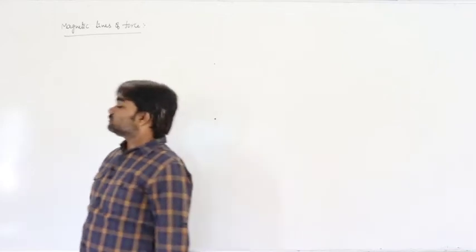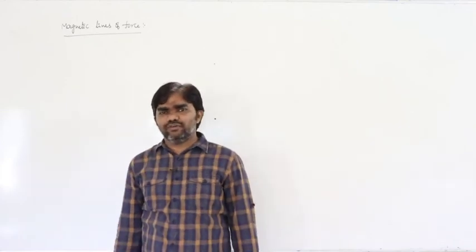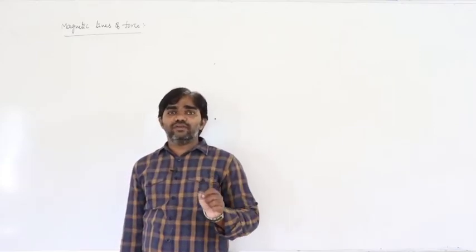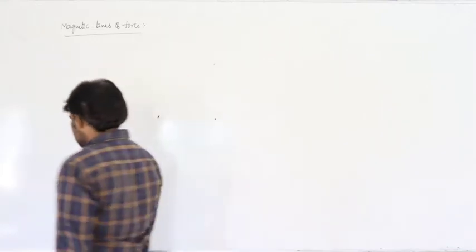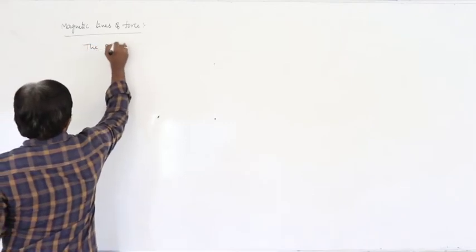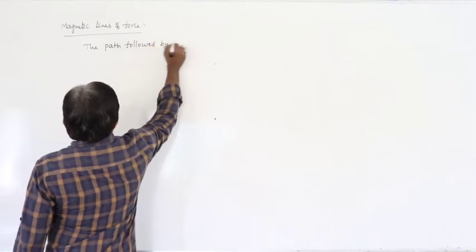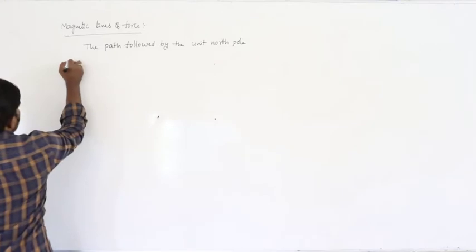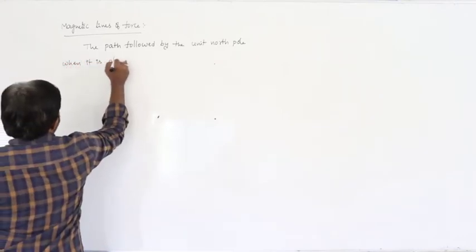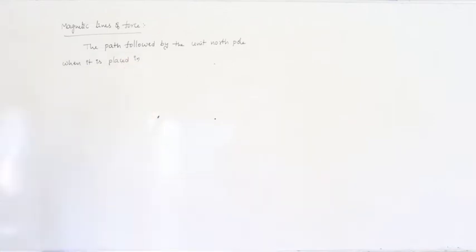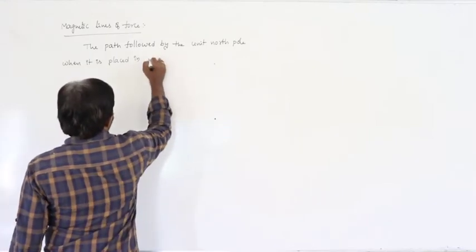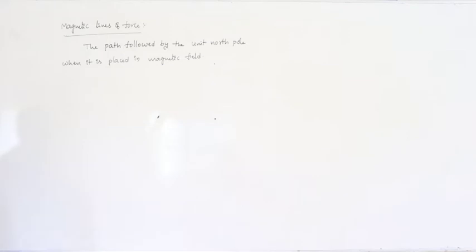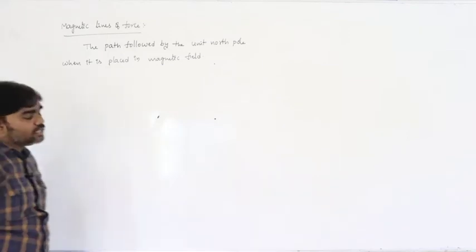In the same way, the path followed by the unit north pole when it is placed in the magnetic field is called magnetic lines of force. So magnetic lines of force are defined as the path followed by the unit north pole when it is placed in a magnetic field.